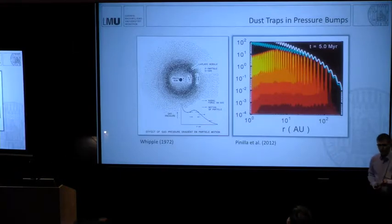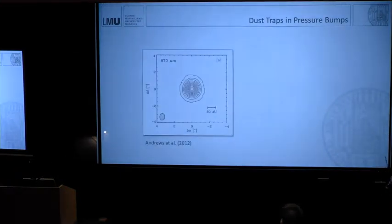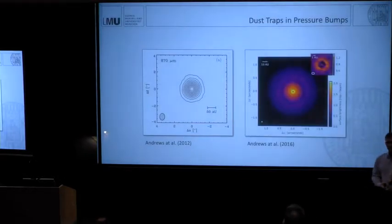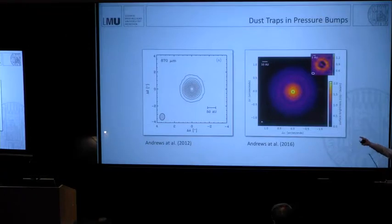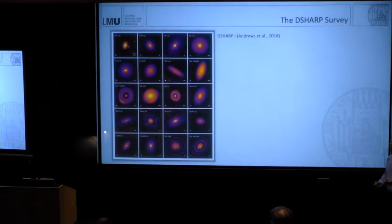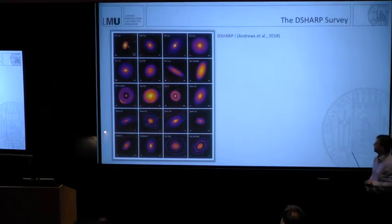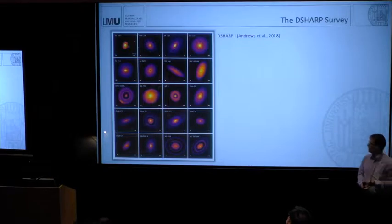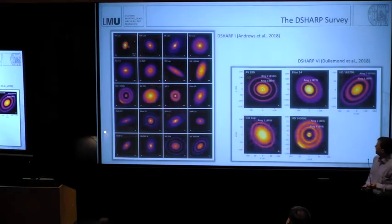That was basically meant as a proof of concept, because in 2012, disks looked like that. This is TW Hydra, and it looked just smooth. But four years later, we suddenly have that image. Notice there's a difference in scale and resolution. So disks have some substructure. Something is happening. This plot was also shown quite often. The DSHARP survey showed lots of rings. So there is something going on.